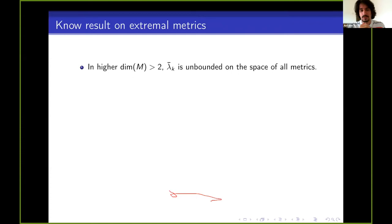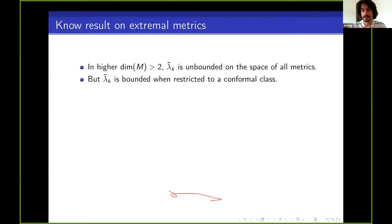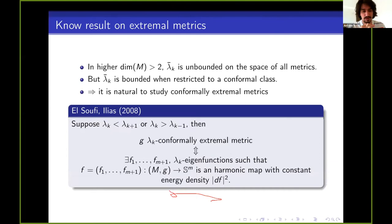In higher dimension, lambda k bar is unbounded on the space of all metrics — we can construct examples with arbitrarily large eigenvalues. So we look at what happens in a conformal class, where lambda k bar is completely bounded. Since we are interested in critical points to find maximums, we restrict to the conformal class and look at conformally extremal metrics. El-Soufi and Ilias in 2008 established the correspondence between lambda k conformally extremal metrics and harmonic maps with constant energy density to the sphere, given by lambda k eigenfunctions.